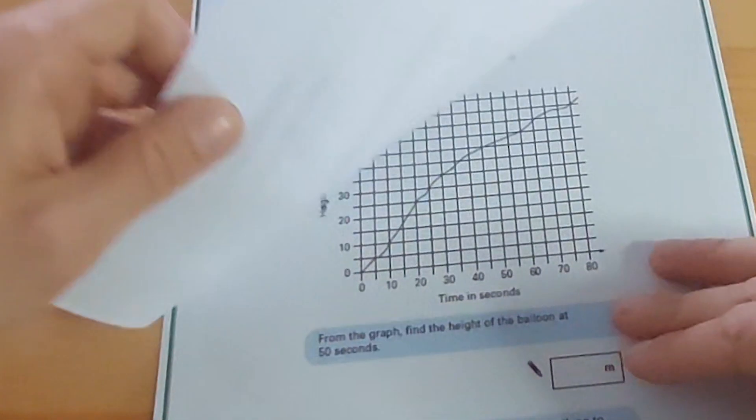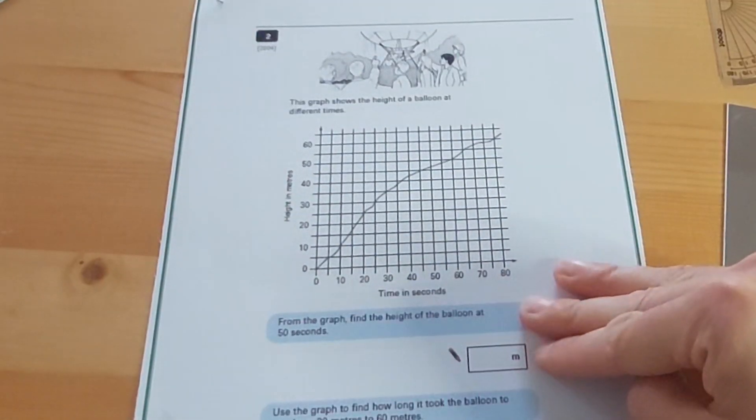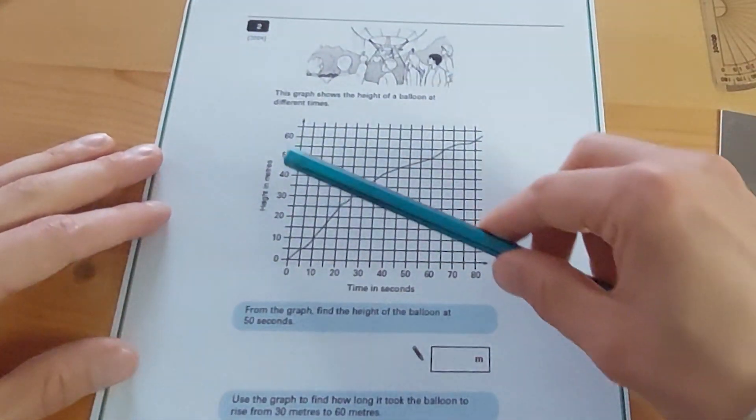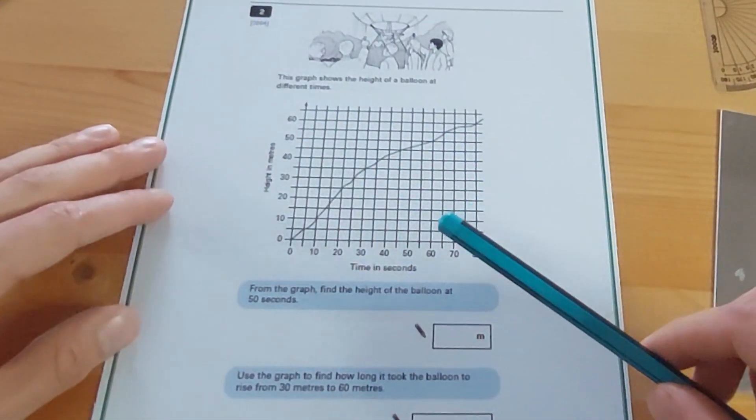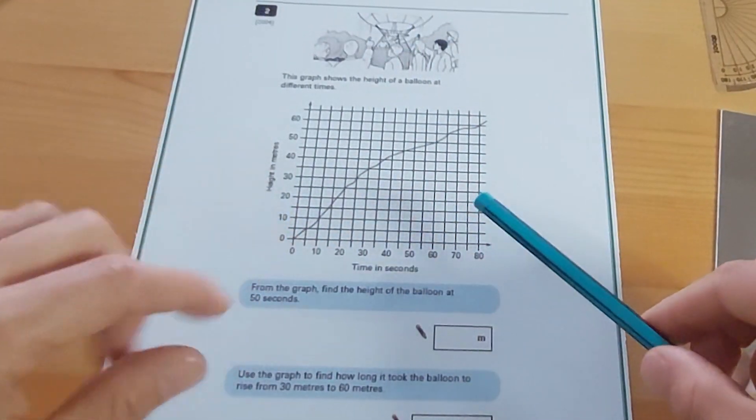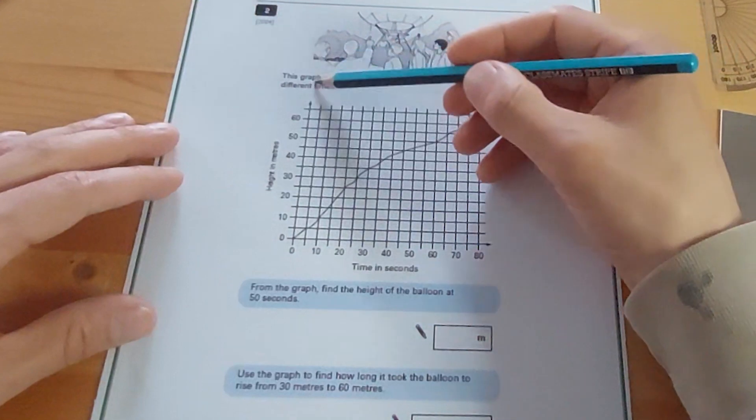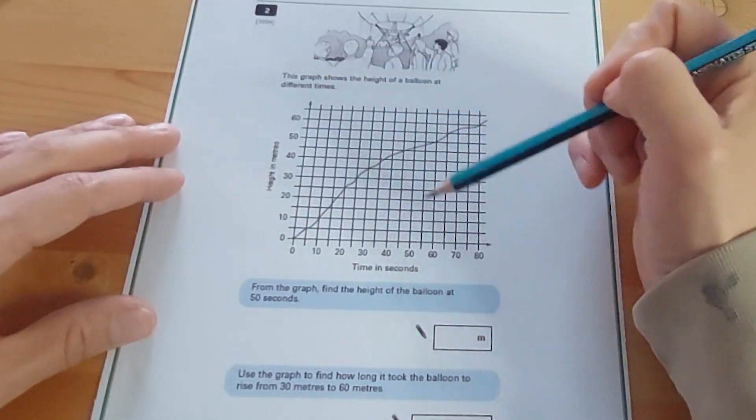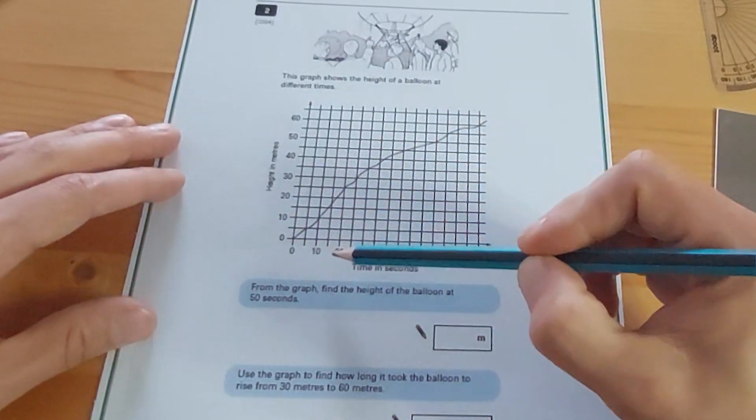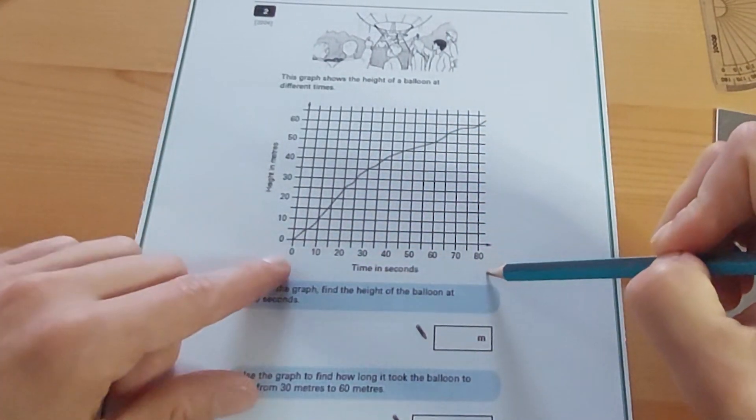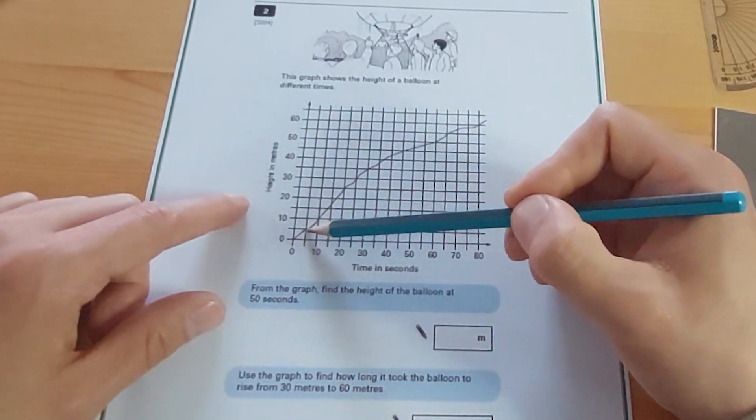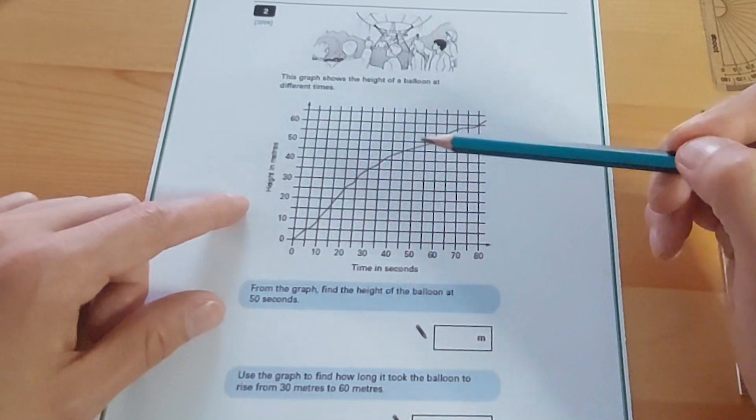Let's have a look at the next one. The next question here is another data handling question, another line graph question. First thing I do, if I'm the child sitting this test, work out what the graph is showing me. The title's at the top - what does the x-axis show, what does the y-axis show? This graph shows the height of a balloon at different times. They've even given us a nice picture there. Height of a balloon - you've got the time in seconds here running from 0 to 80, and you've got the height, the unit of measurement is meters, and you can see obviously it rose as the balloon got higher.